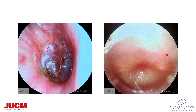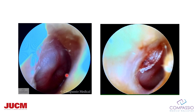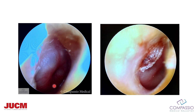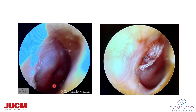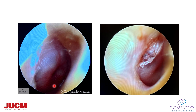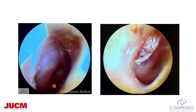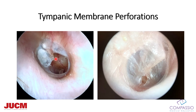Now we're getting into otitis media. This is a bulging TM — that's a giveaway for otitis media. Here's a one-year-old with a nice bulging tympanic membrane full of pus. What I want you to watch is the pulsations of that middle ear from the pus under pressure.